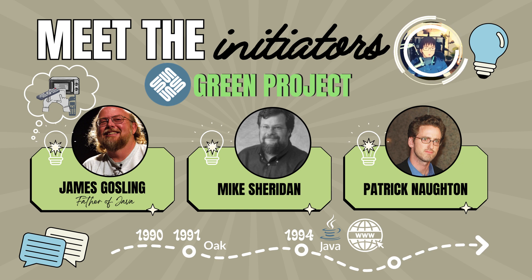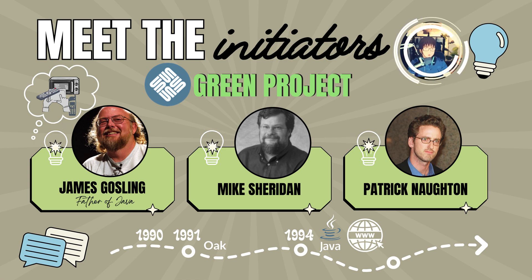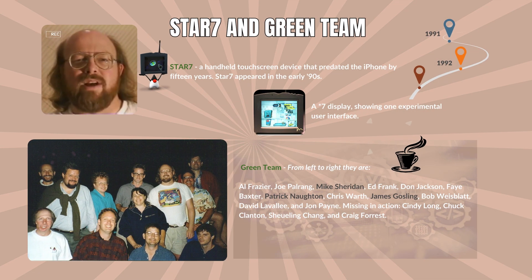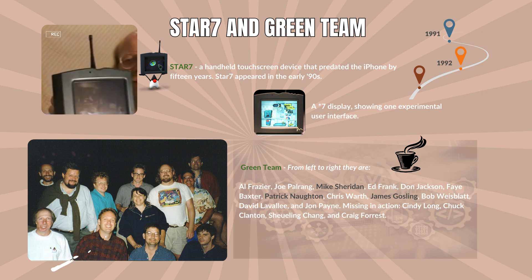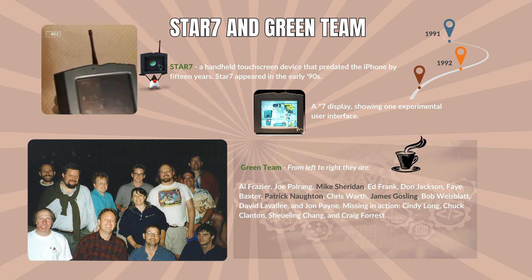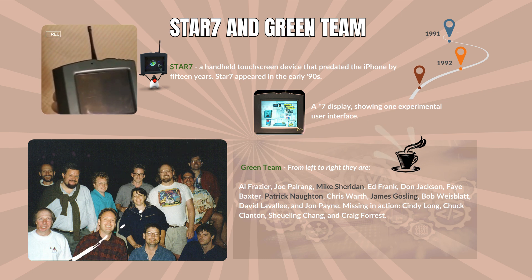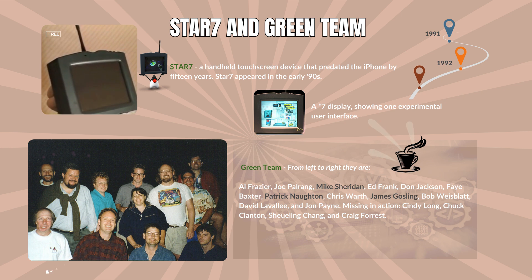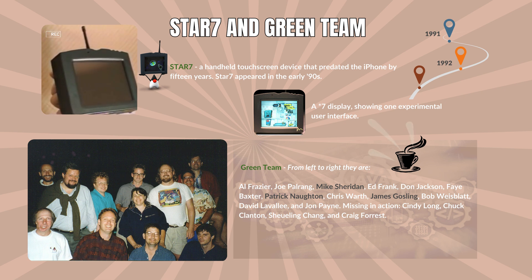James Gosling is often referred to as the father of Java for his key role in the creation and shaping of the design principles of Java. Hello, I am James Gosling, and this is a Star 7. Star 7s were built as part of the Green Project at Sun Laboratories between 1991 and 1992. These are a prototype, sort of hand-held device, that was built to do some exploration of issues in consumer electronics.